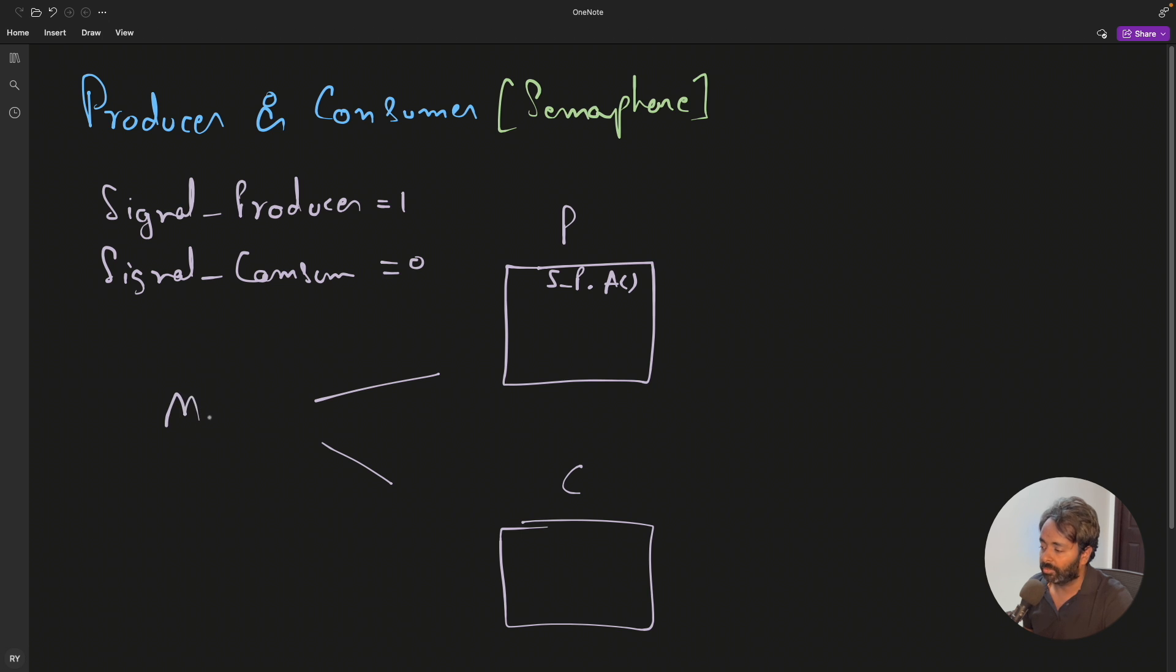We have a main function from there they will start at the same time. But then you have to synchronize which one will start first. In the beginning itself consumer doesn't make any sense because if nothing is there to consume, what will it consume?